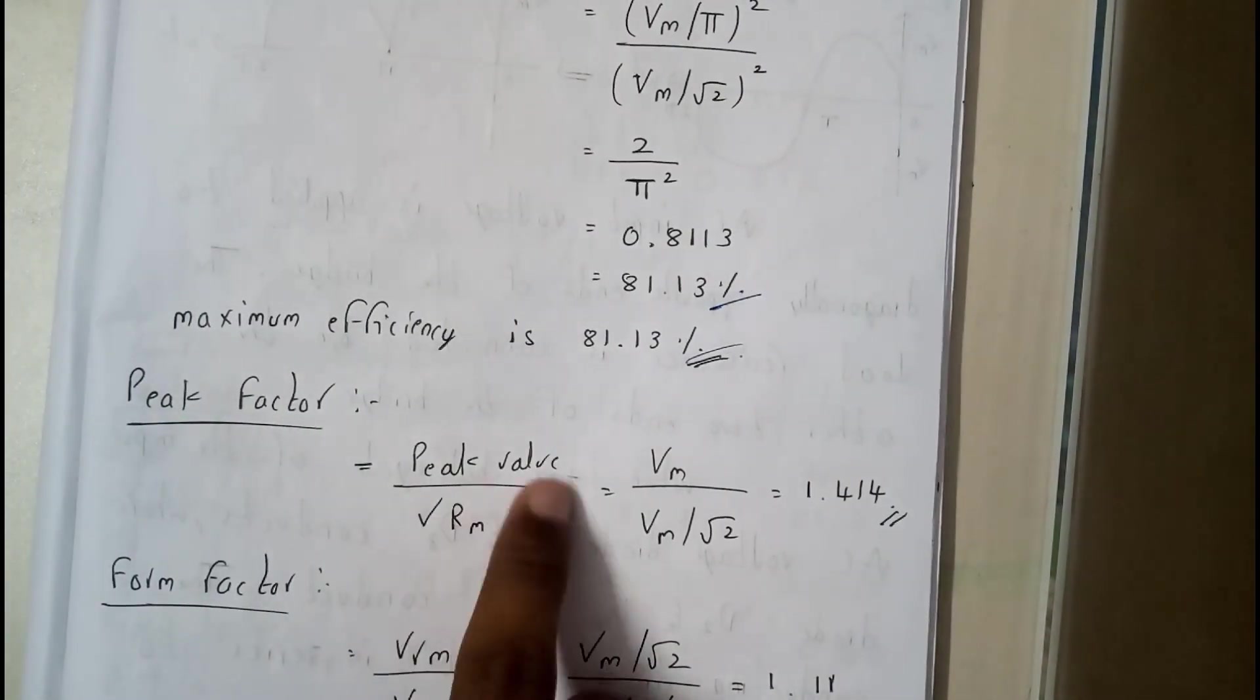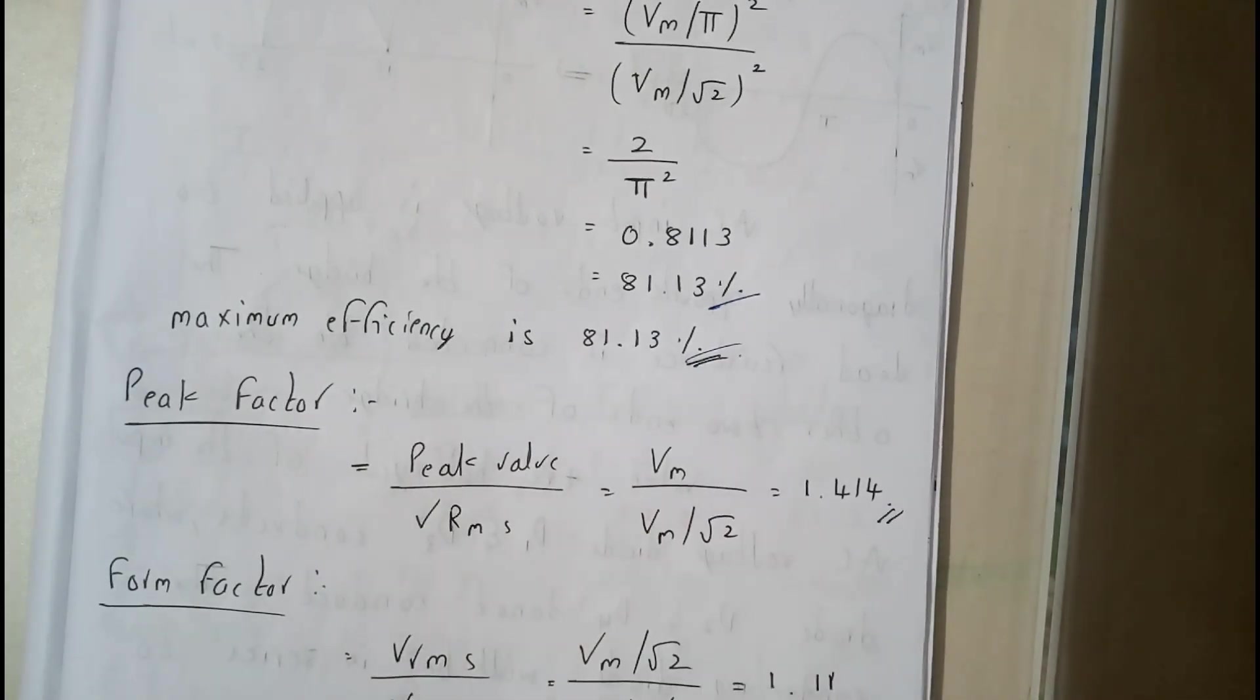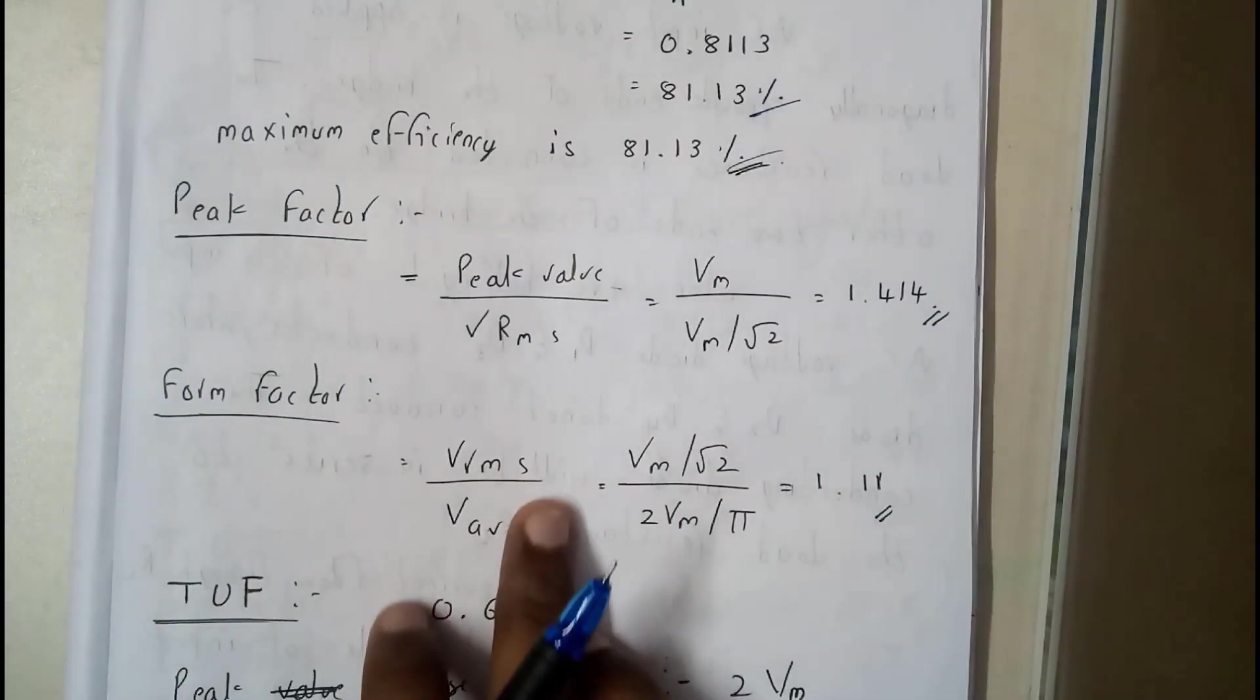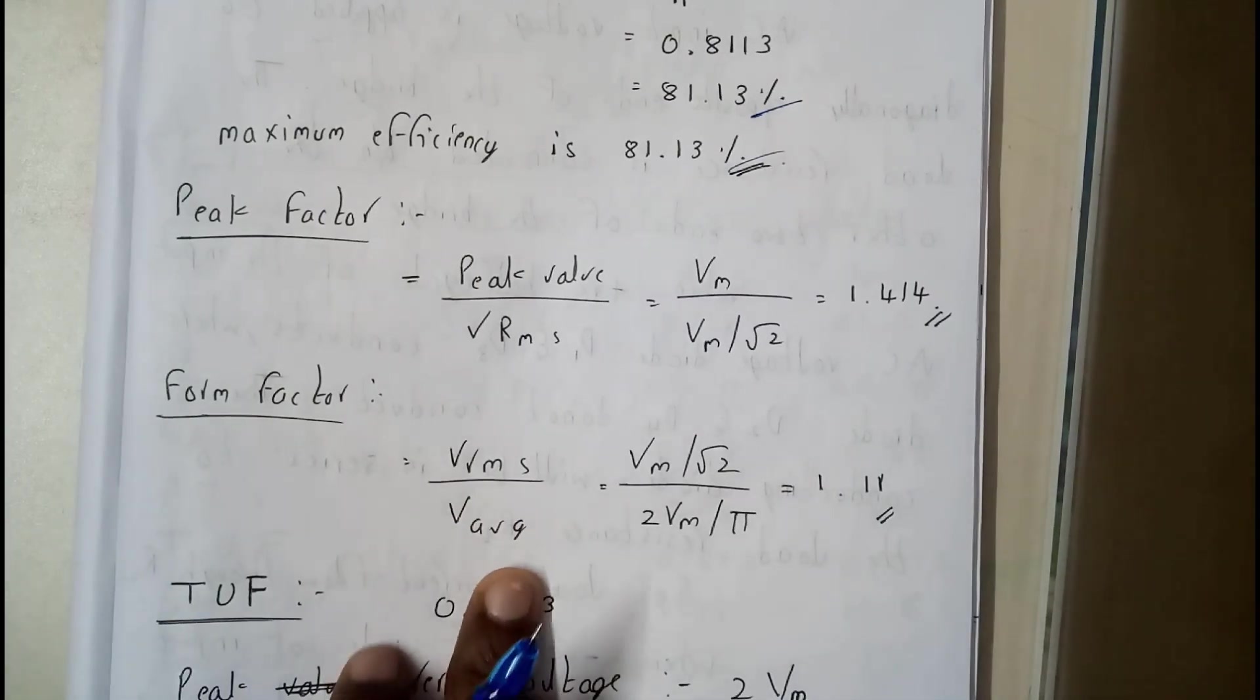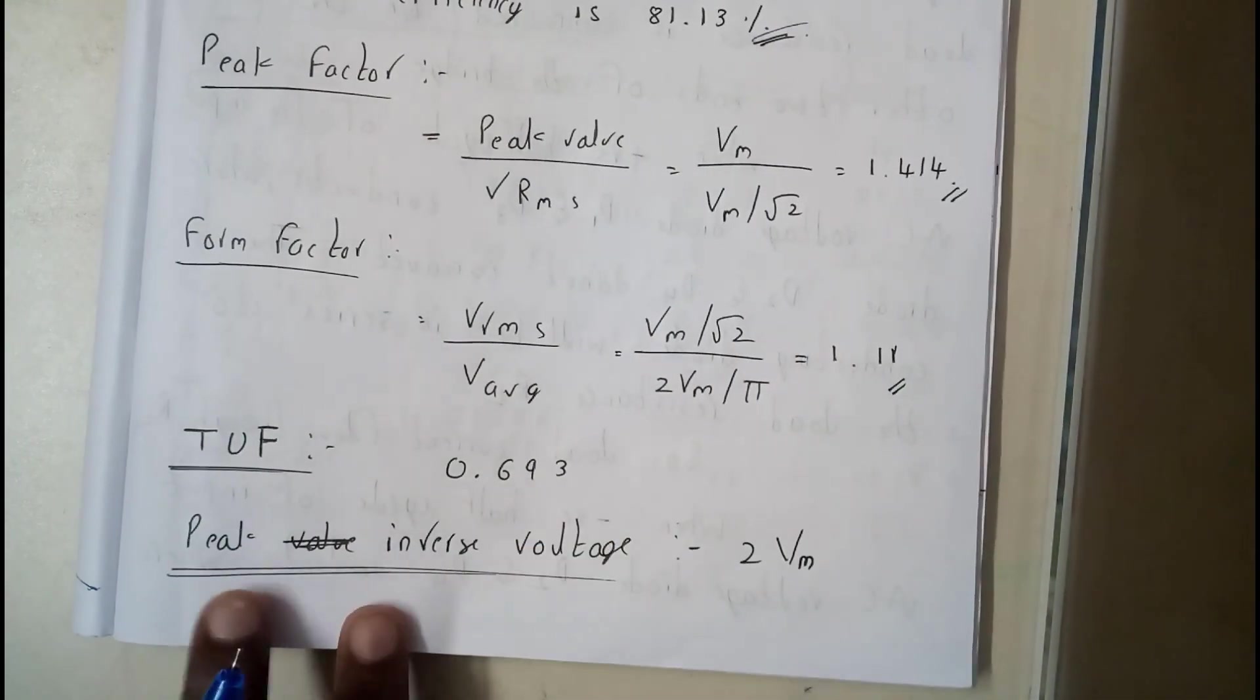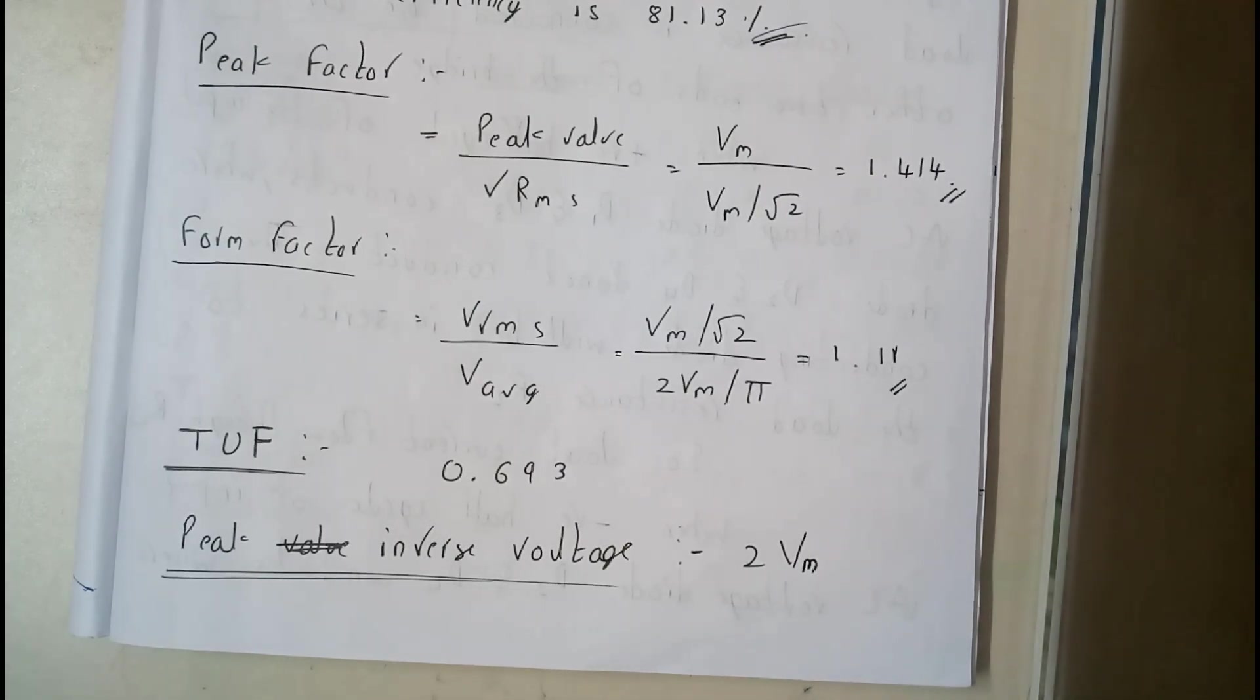Peak factor is nothing but peak value by V_rms—that is V_m by V_rms, which is V_m by root 2, so root 2 will be coming up, that is 1.414. Form factor is V_rms by V_average, which equals 1.11. Similarly, TUF equals 0.693 and peak inverse voltage is 2V_m. Now I hope everyone got a small idea. I hope this is a short tutorial compared to the previous video. That's the reason why I discussed one topic in detail and we will be connecting all the topics.